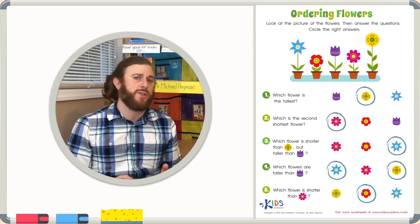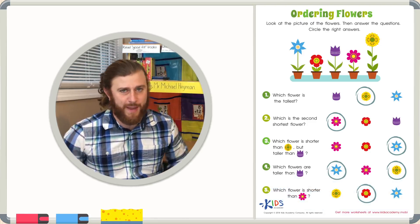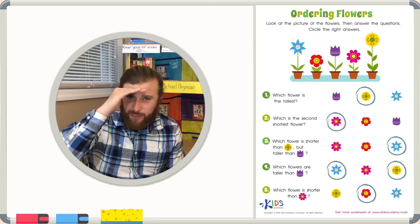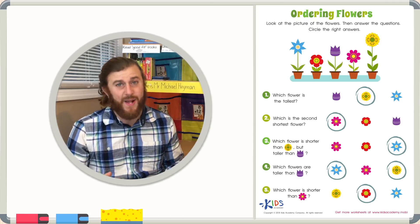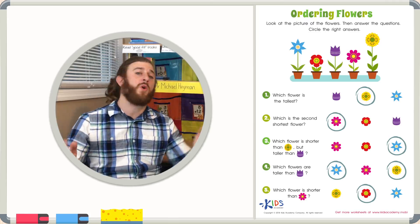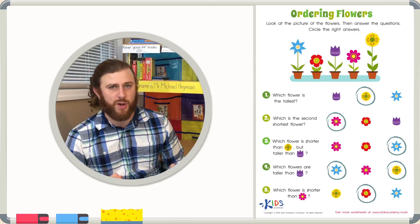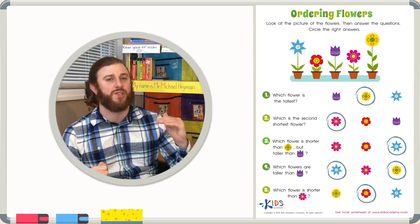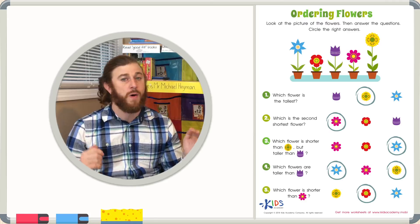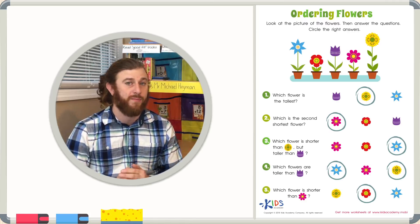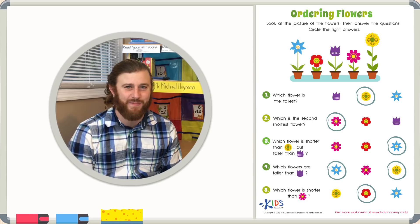Remember, boys and girls, when you are ordering plants, or anything for that matter, you have to look really carefully at the picture. Then, you have to read the word problems even more carefully, because they may be asking you about the second shortest or second tallest, or which flower or object is in between one another. Thanks for watching, boys and girls, and we'll see you next time.